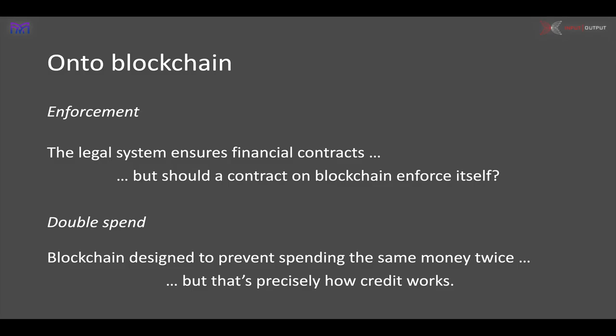Another intriguing difference between the blockchain world and the financial world is the question of double spend. We want cryptocurrencies to behave like real currencies, in that money can't be spent twice — if I have a £10 note and I spend it, that note is spent and I can't spend it again. But in the financial system, banks do effectively spend money repeatedly, and any source of credit is, in one sense, a double spend.